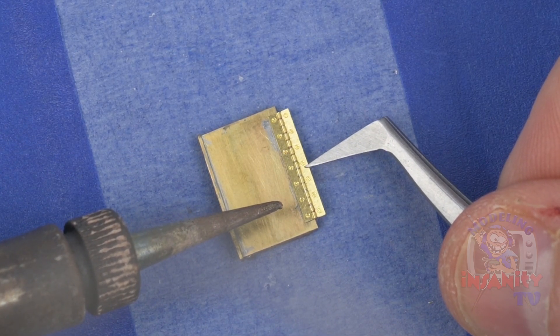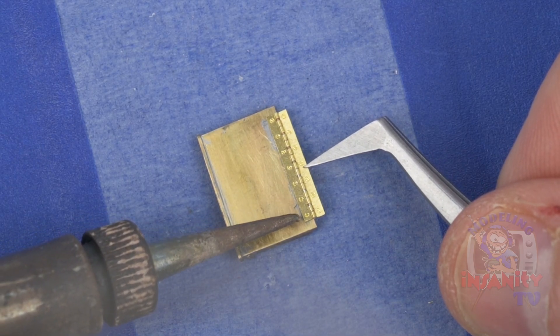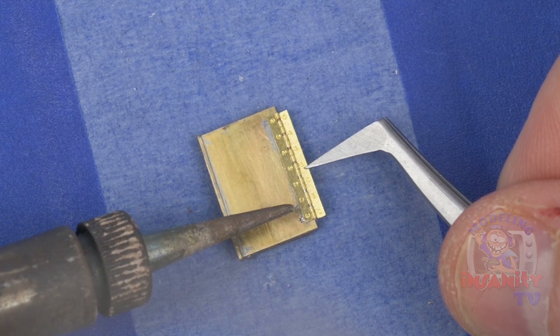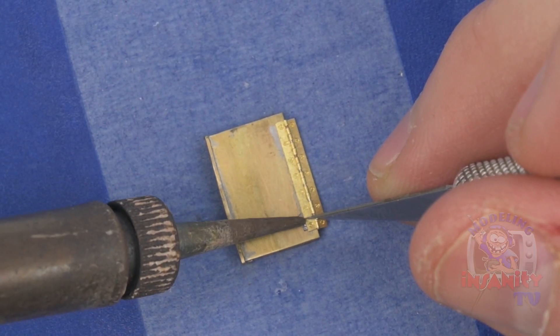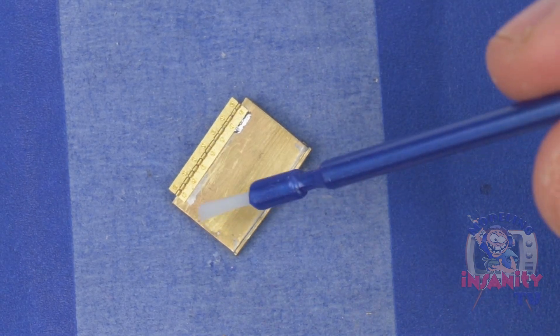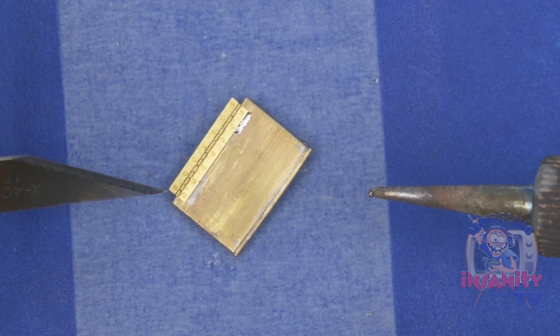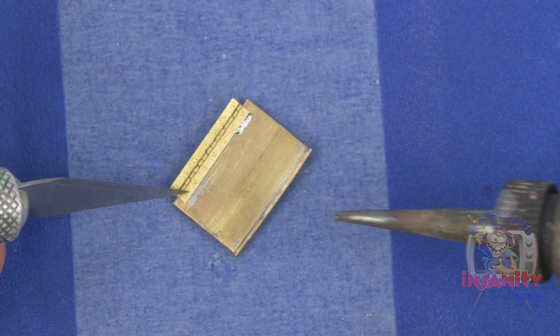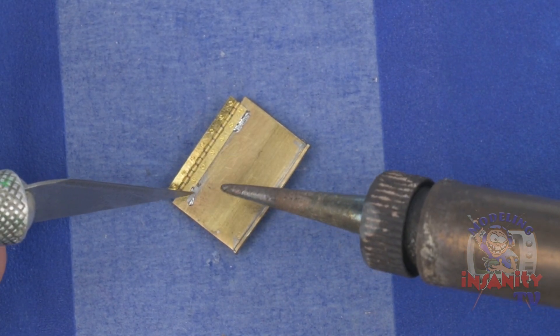I hold the hinge to the mud guard and ensure it's lined up properly. Using a little solder, I tack the hinge in place. This way if it's not straight, it could be removed easily. Once I know the hinge is in the right position, I add a little more solder to it. I then add some flux to the other side and apply more solder and spread it out with the soldering iron. This is a quick crash course in soldering, as I plan on doing a whole series of videos dedicated to just soldering brass parts.